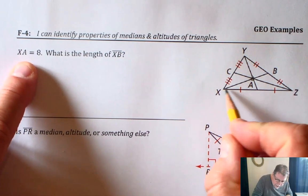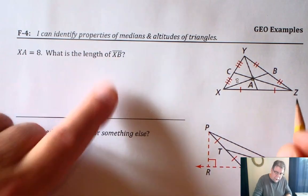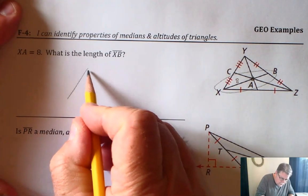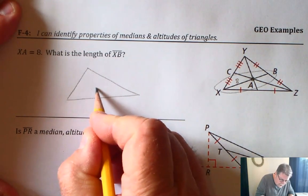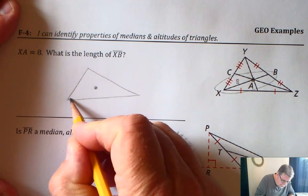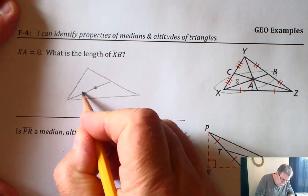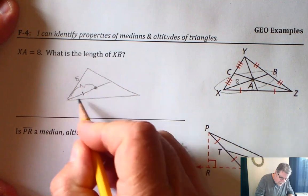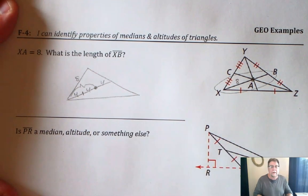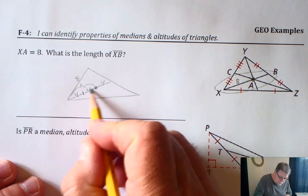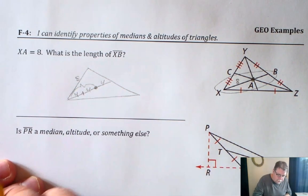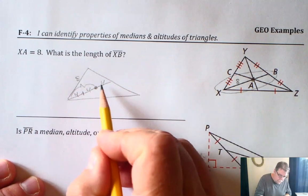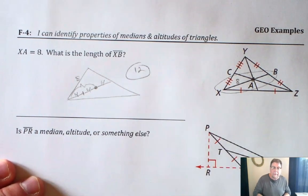We know that XA is 8. What's XB? Here's the way I like to think of it: take this segment and redraw it with the centroid marked. It looks like we have three equal segments. Since this segment is 8, that means each third is 4 — so this is 4, this is 4, and that'll be 4. I like to break up the piece from the vertex to the centroid into two equal parts and cut that number in half. So XB, which is the entire length, would be 4 plus 4 plus 4, and that's 12 units long.